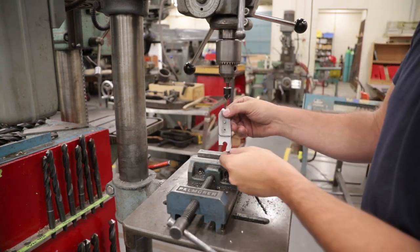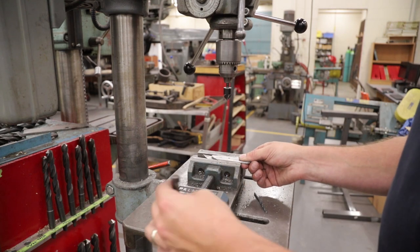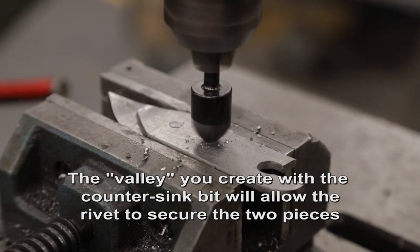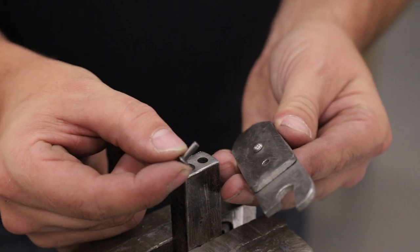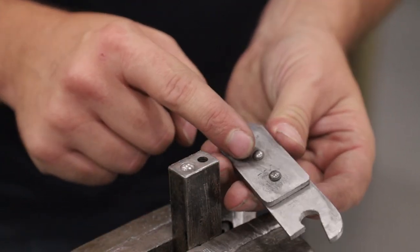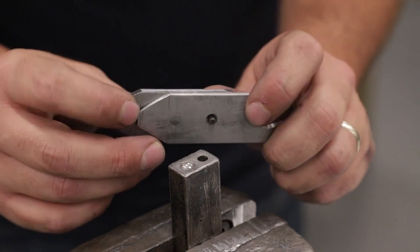What side are we going to countersink? The side that we are going to hammer. Install your rivet. Make sure they match. You want both bumps on the top. That way it's sticking out the bottom.